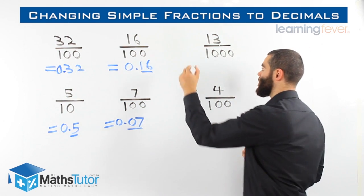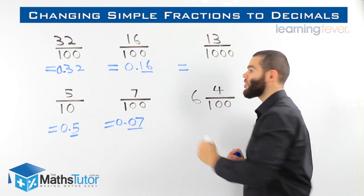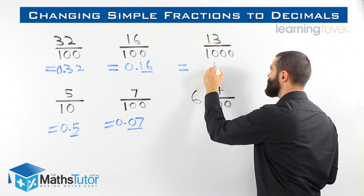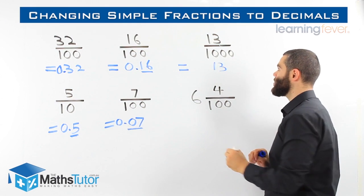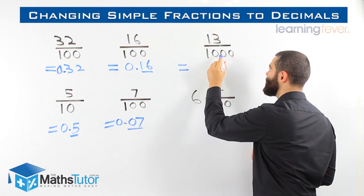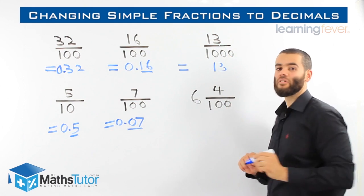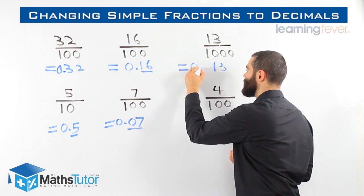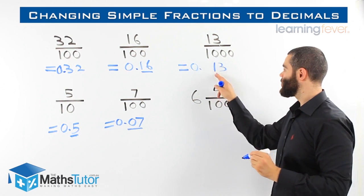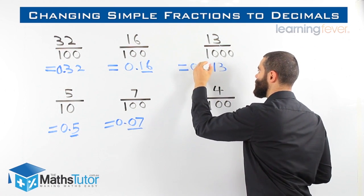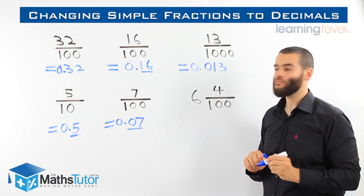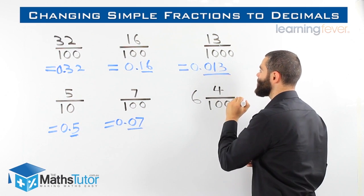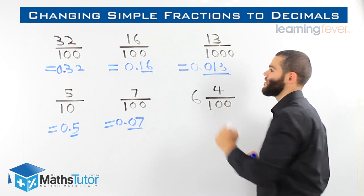Another example: 13 out of 1000. We have our number 13, and we know that we have three zeros — 1, 2, 3. That means there are three numbers after the point. We only have two digits, so we put the third one in: 0.013. Three numbers after the decimal point, three zeros.